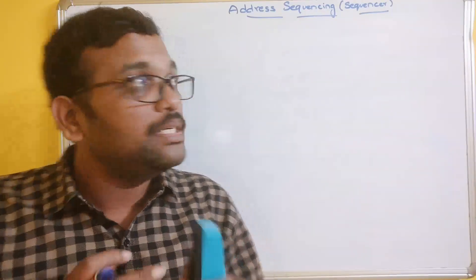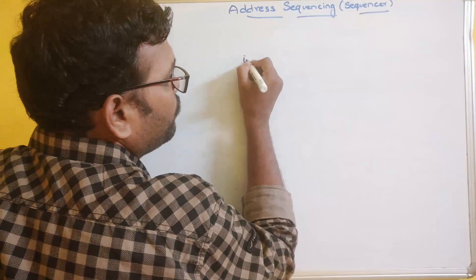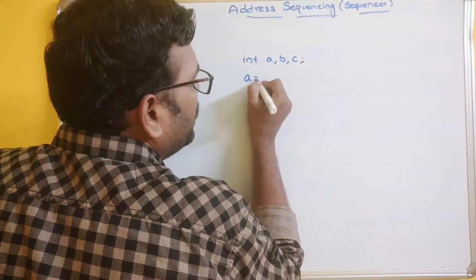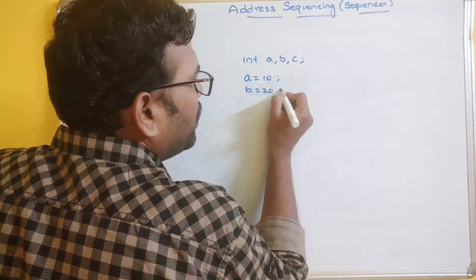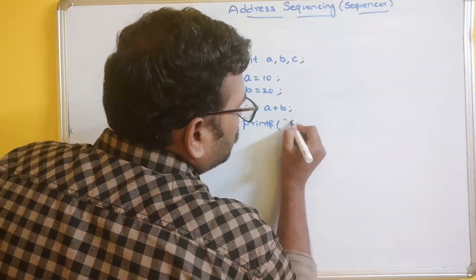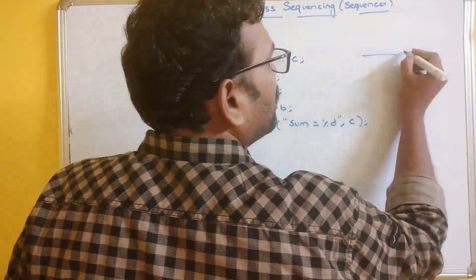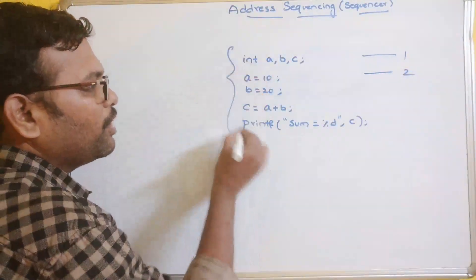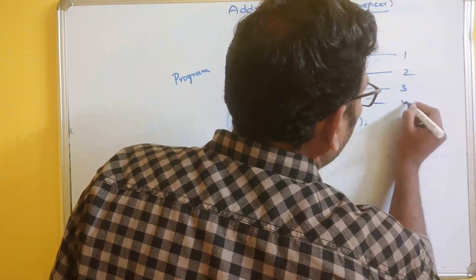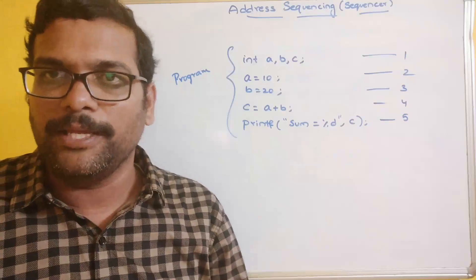For example, consider a C program which implements the addition of two numbers. The first part is a declaration — int a, b, c — and the second is input statements or directly assigning values like a = 10 and b = 20, then applying the logic c = a + b. This program has five instructions in total.